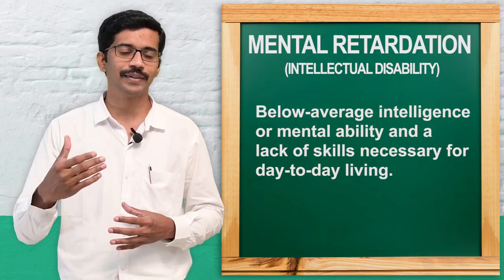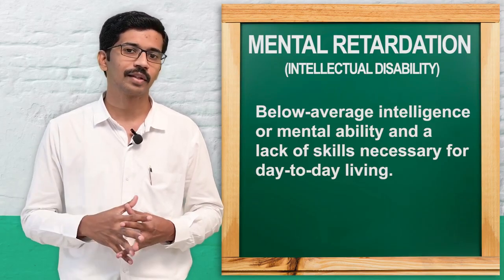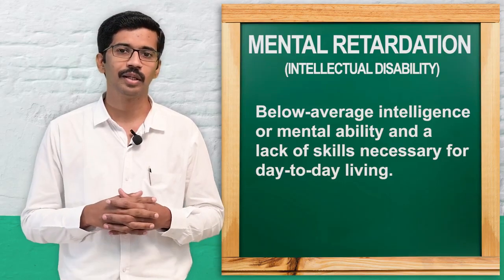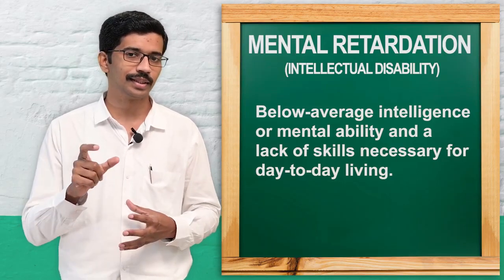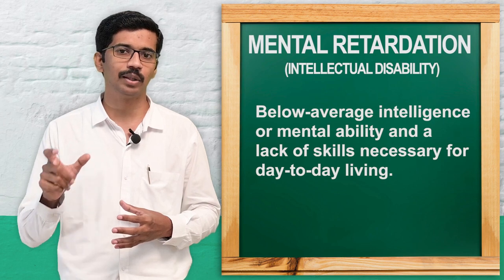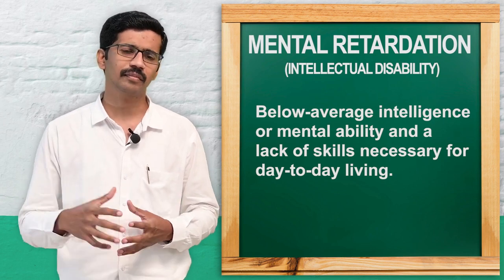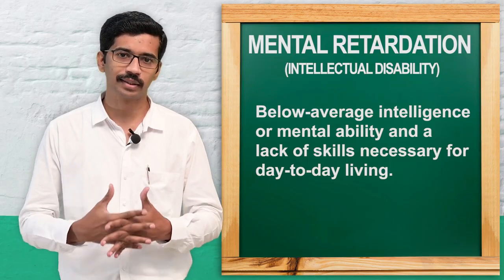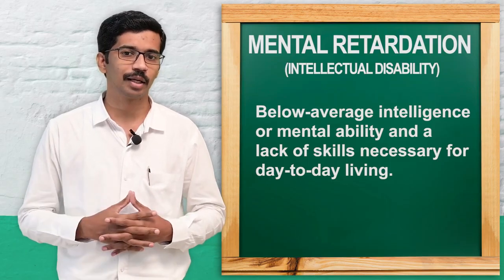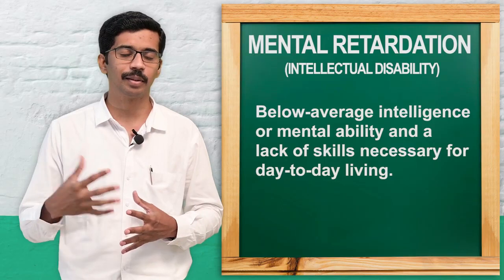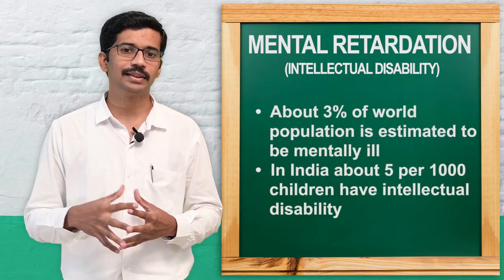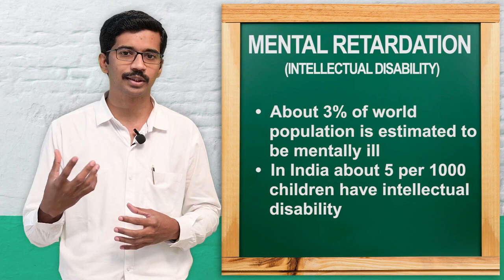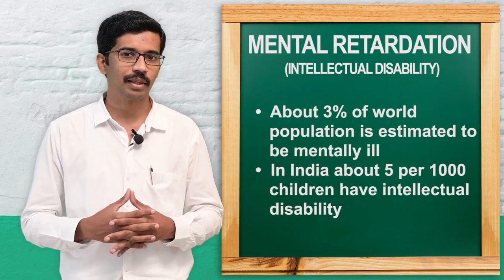If that score is less than 70, we consider the person to be having mental retardation — that is what we call sub-average or below-average. This defect is usually present at the time of birth itself, or it may develop later. Now we will see the epidemiology — the incidence and prevalence of mental retardation.